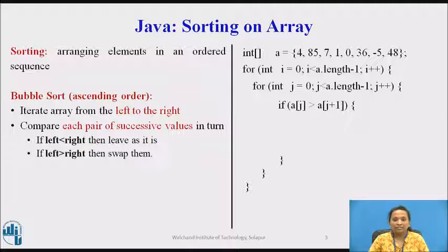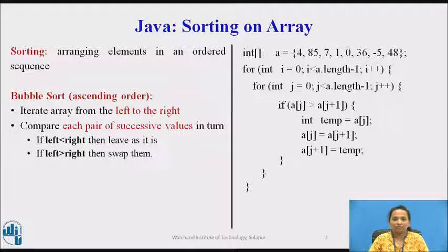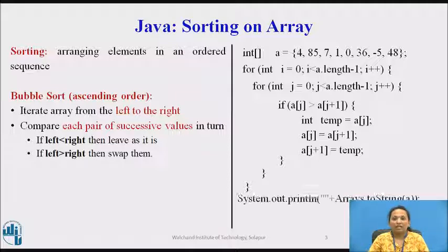Here is the condition to check if the left element is greater than the right element. If the condition is true, we are swapping the value of the left element, that is a[j], with the right element, that is a[j+1]. Since there is no action for the else case, the else block is not mentioned here. Finally, we are displaying the sorted list by printing the contents of array A.